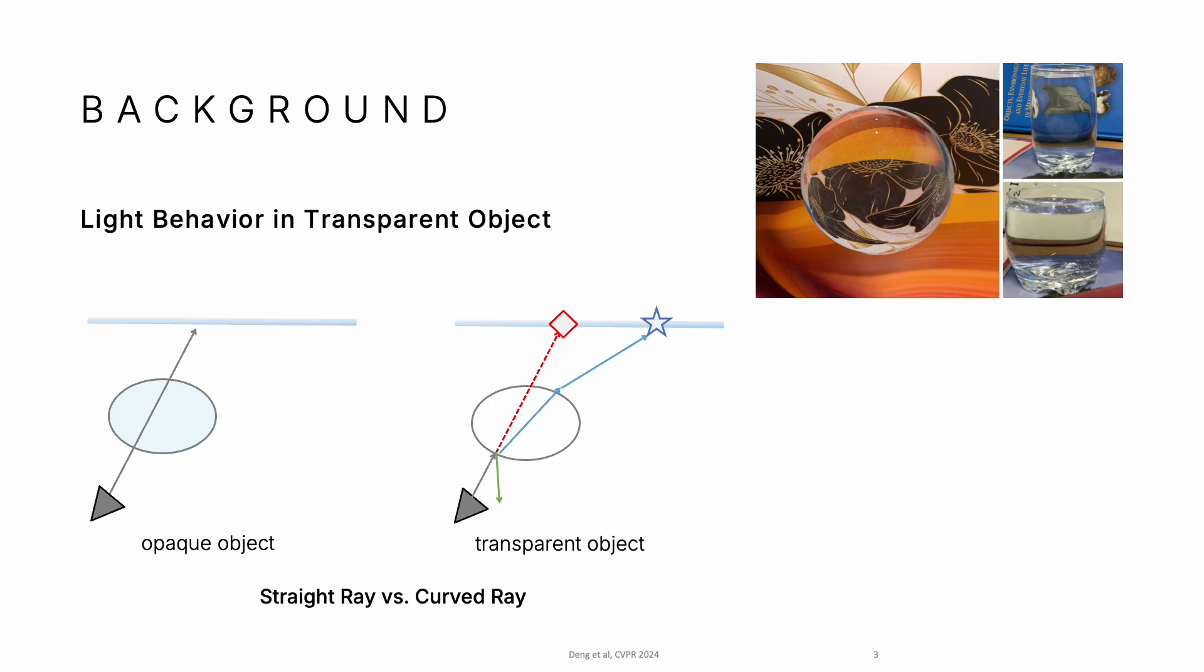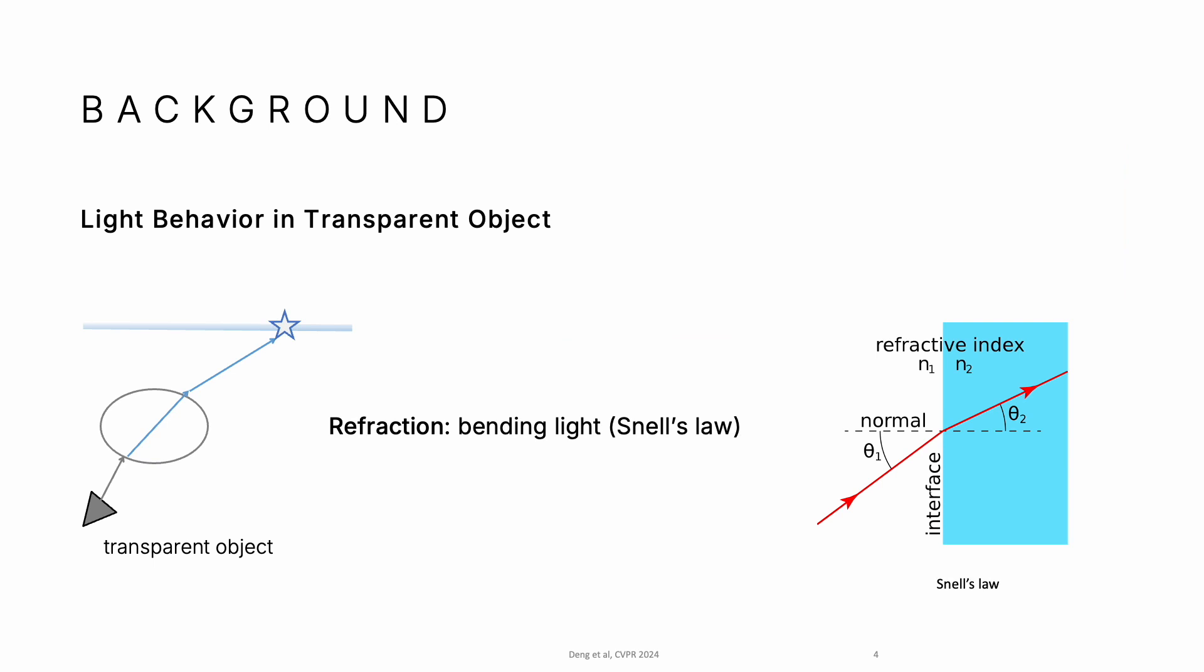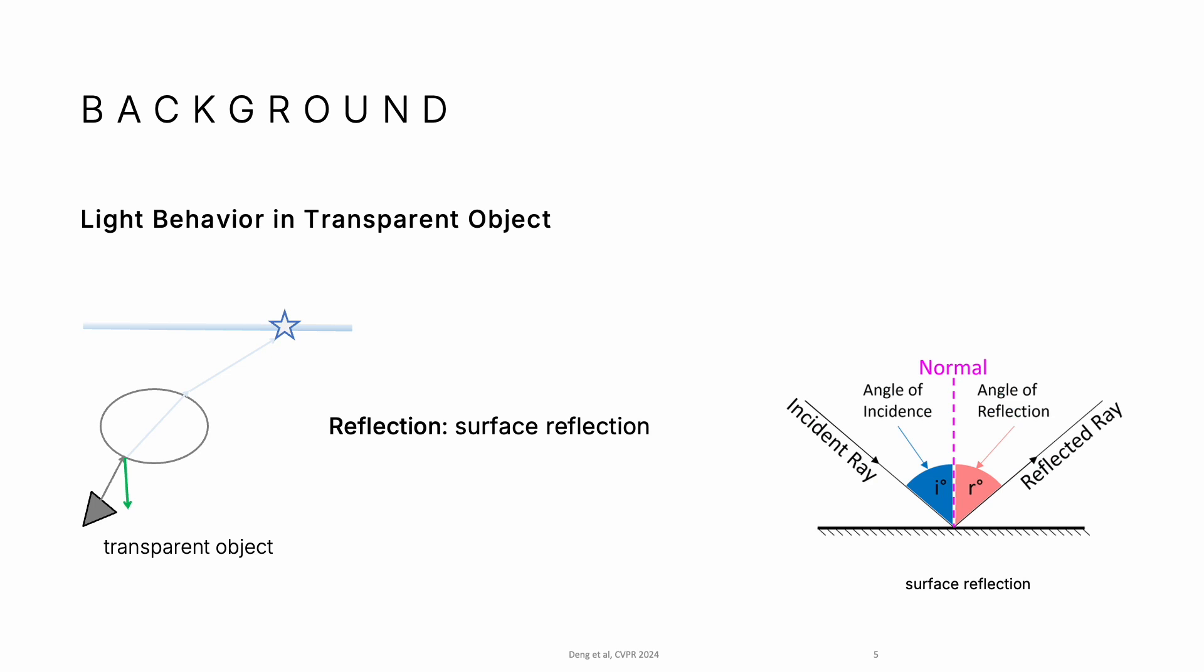While this assumption works for opaque objects, it doesn't work for transparent objects. First, light rays are curved due to refraction. Second, at the surface, there is reflection.